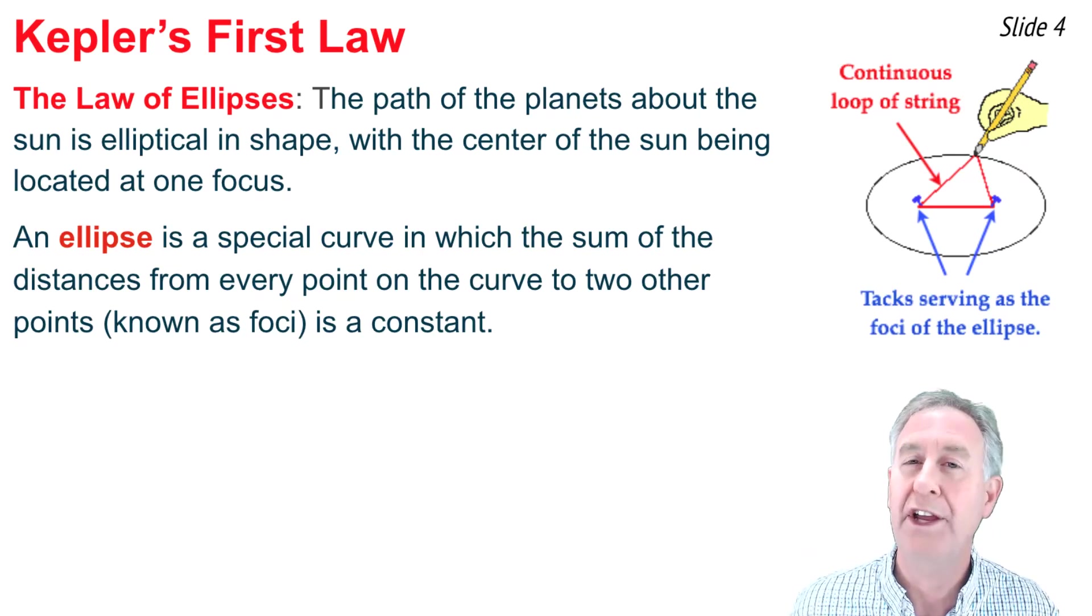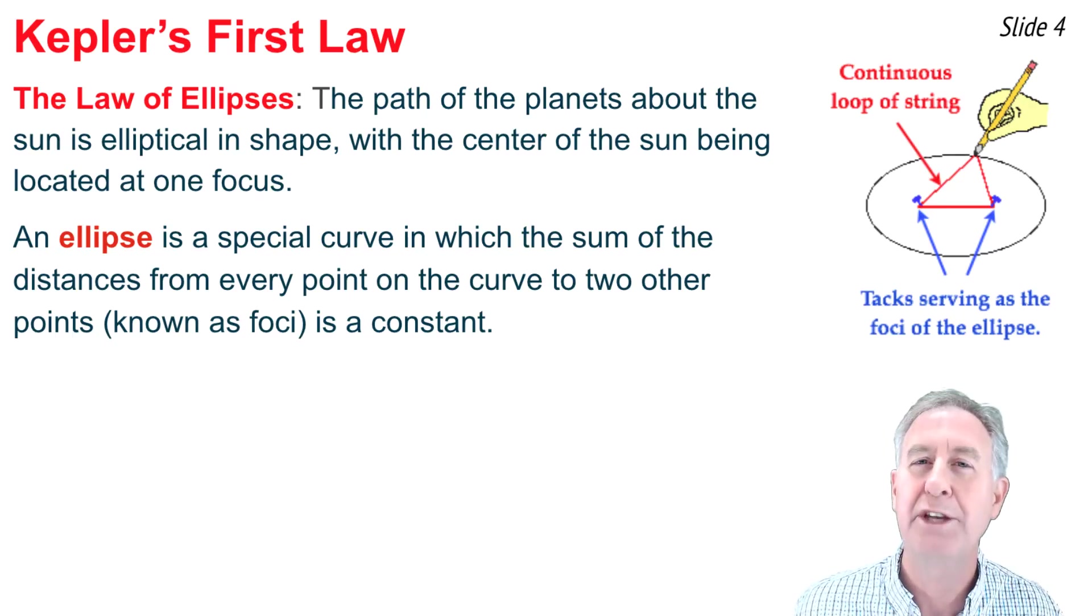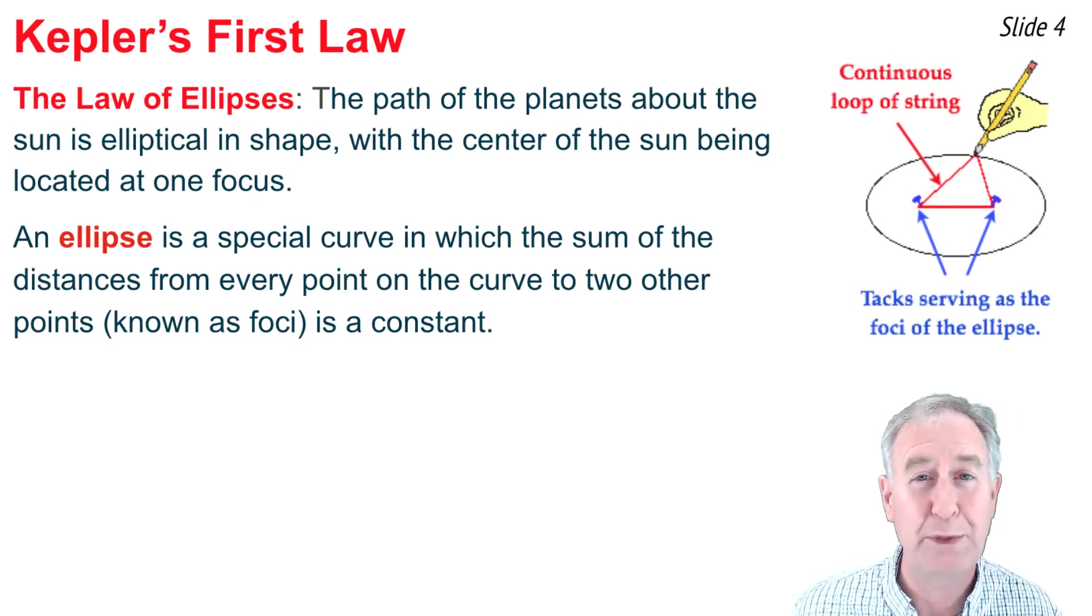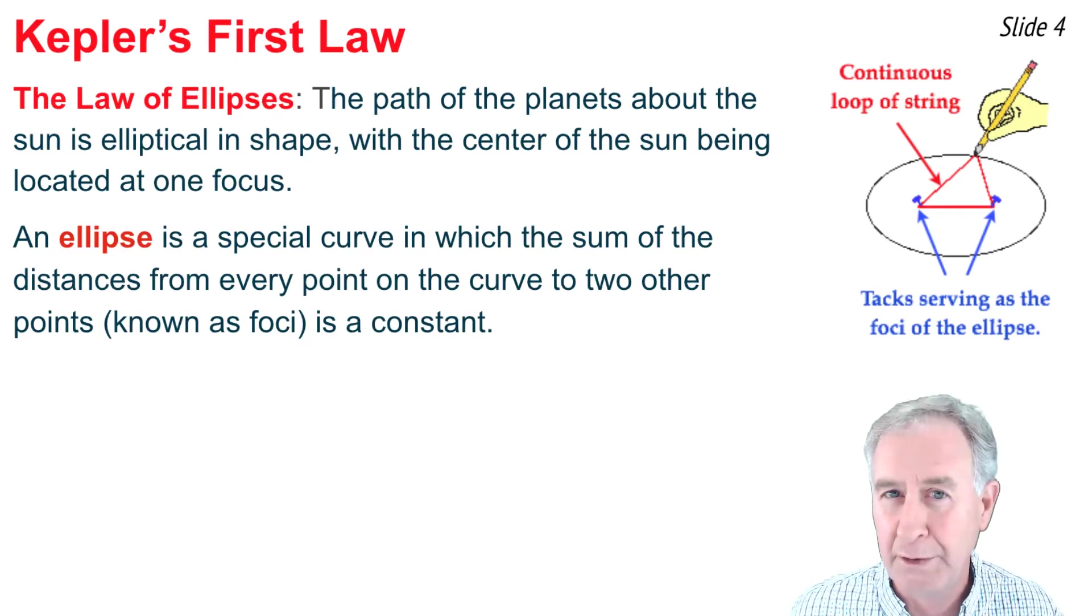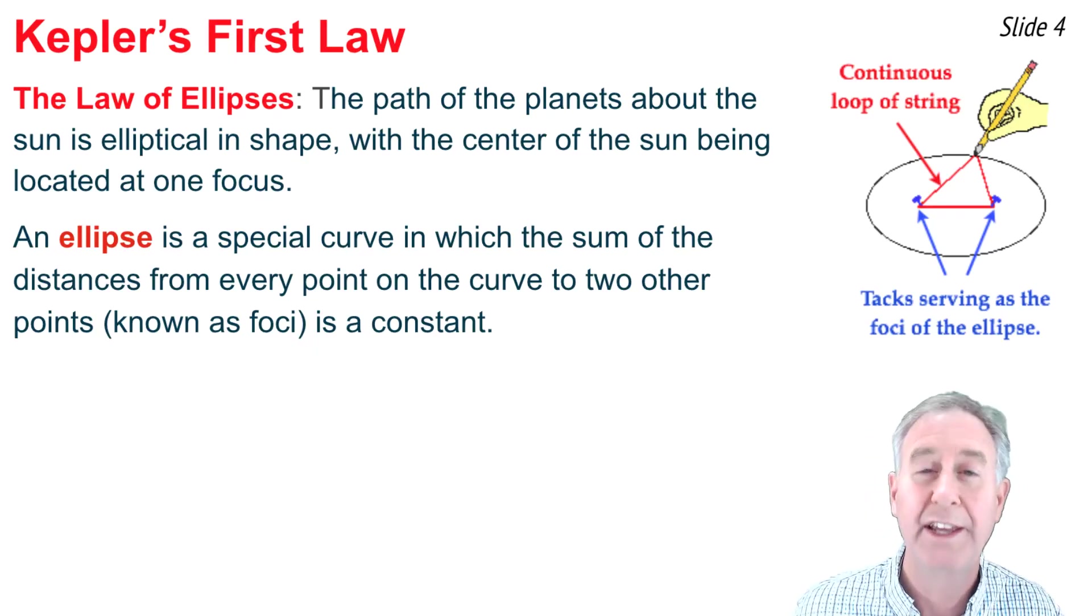Then you begin to draw out a shape using the pencil, keeping the string tight at all times, and drawing out a shape around those two tacks. The result would be an ellipse. An ellipse is a special type of curve in which the sum of the distances from every point on the curve to the two foci is a constant.